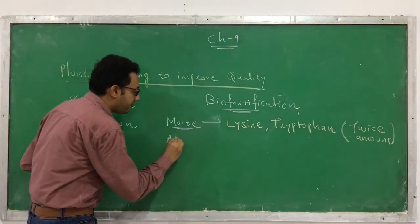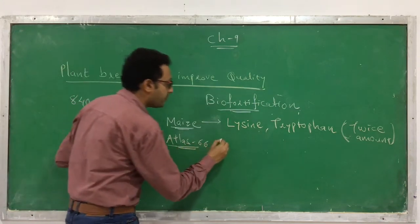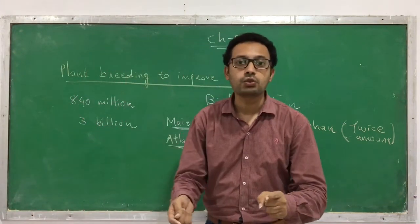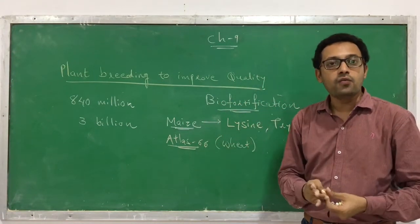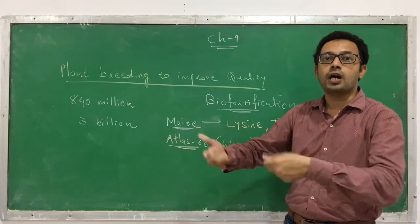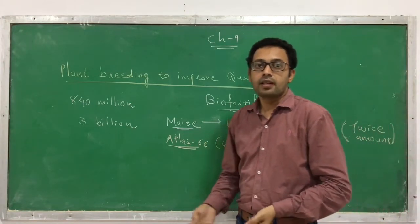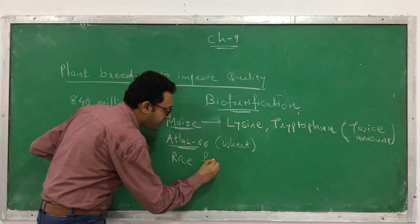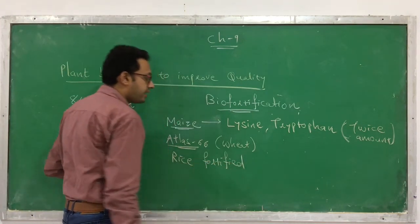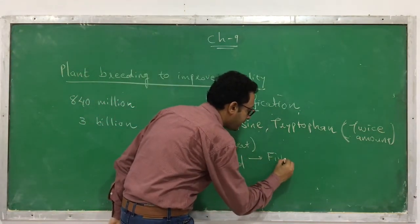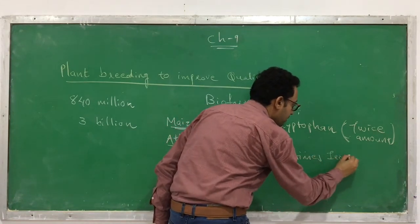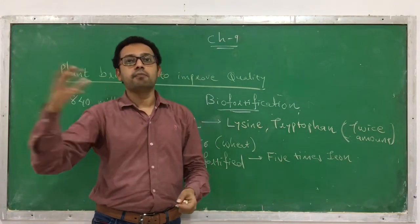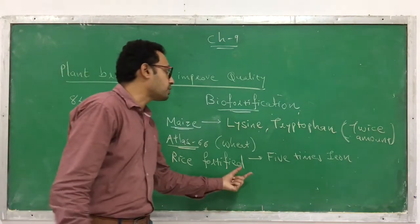Similarly, in the variety called Atlas 66 — a variety of wheat — the characteristics of Atlas 66 have been introduced into common cultivated wheat, making it produce more nutrients. It is also possible to develop fortified rice in which we can increase the iron content by 5 times compared to traditional variety. So even if a person eats a small quantity of this rice, they get 5 times more iron. This is possible due to biofortification.